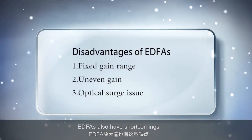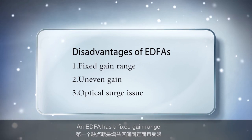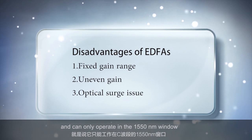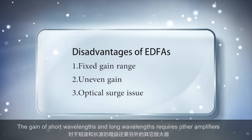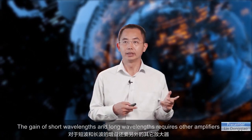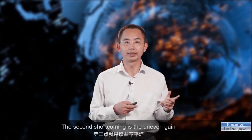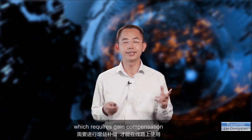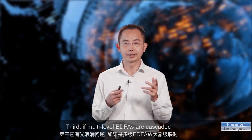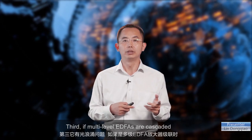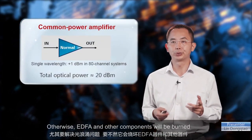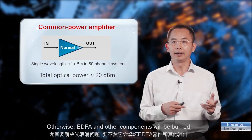EDFAs also have shortcomings. An EDFA has a fixed gain range and can only operate in the 1550 nanometer window; the gain of short wavelengths and long wavelengths requires other amplifiers. The second shortcoming is the uneven gain, which requires gain compensation. Third, if multi-level EDFAs are cascaded, the optical surge issue needs to be resolved; otherwise, EDFA and other components will be burned.